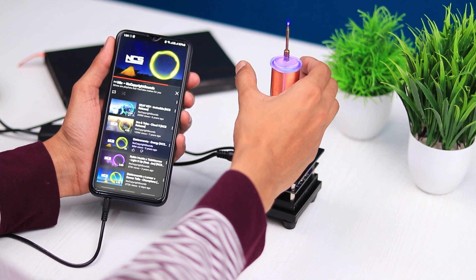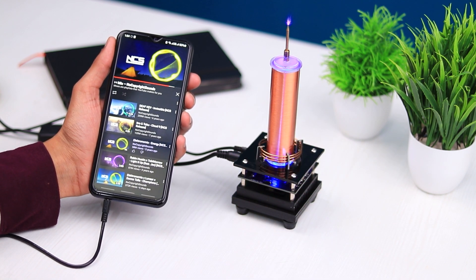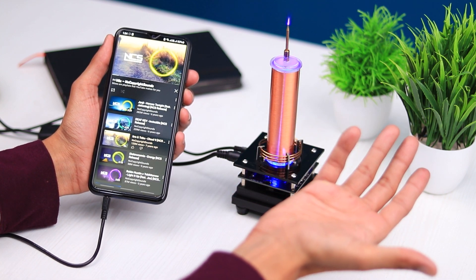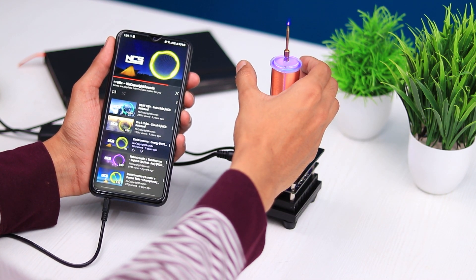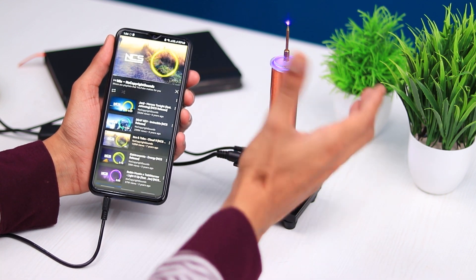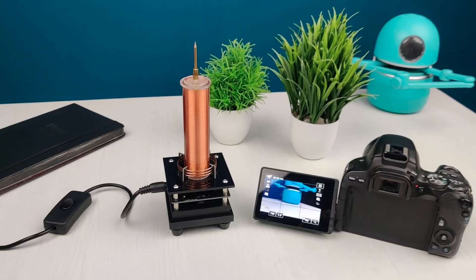I have also noticed a strange thing when operating this Tesla coil. Did you notice my smartphone screen? It's just like a ghost operating my smartphone. Don't worry, there are no ghosts. The electric field from the Tesla coil might be affecting my touchscreen. That's why the touchscreen is operating by itself.